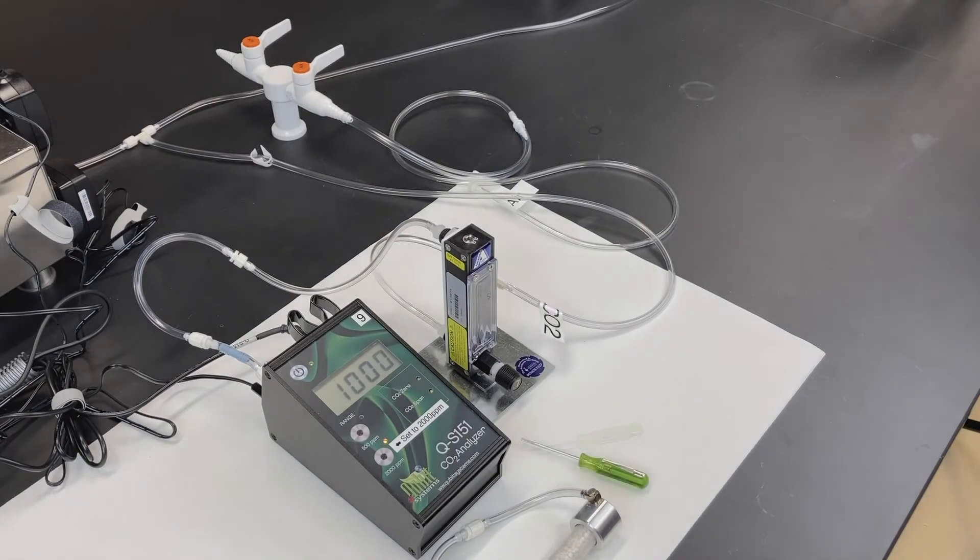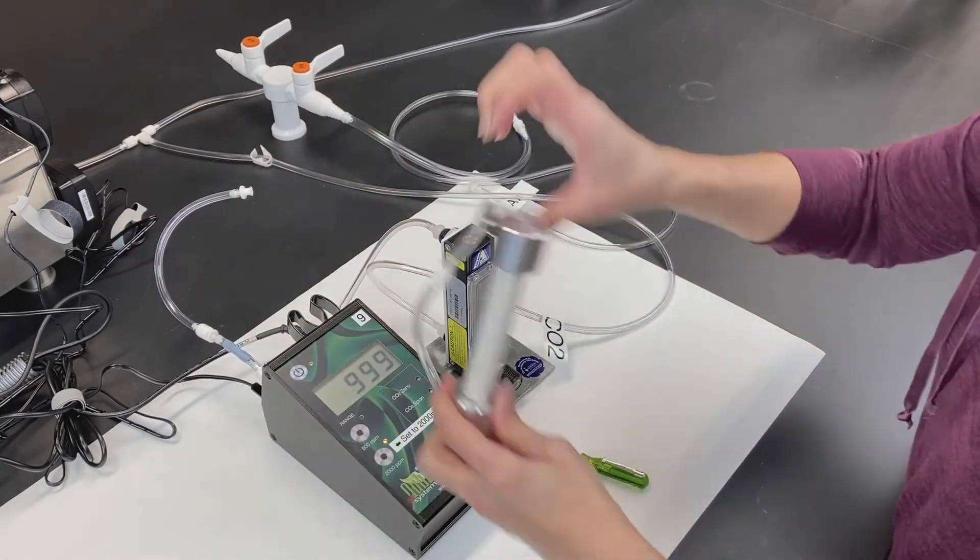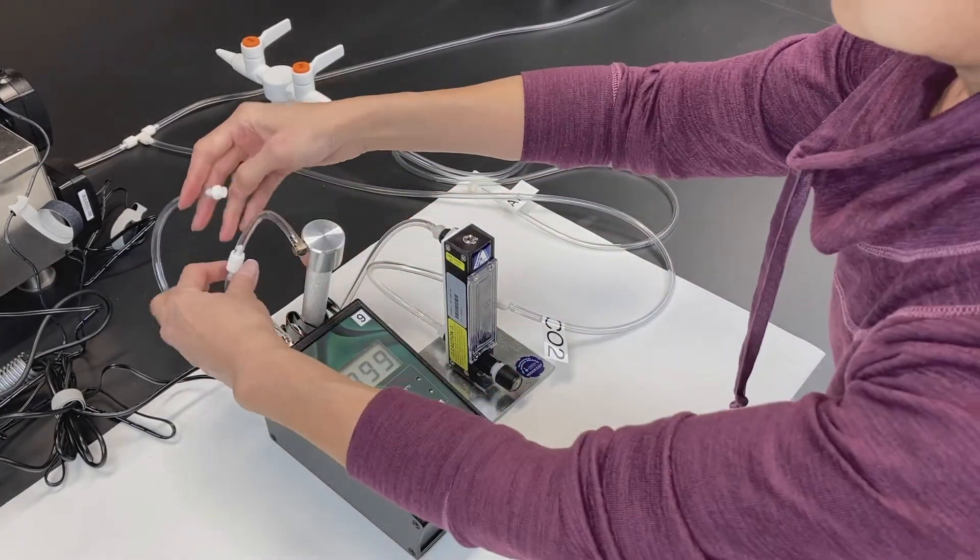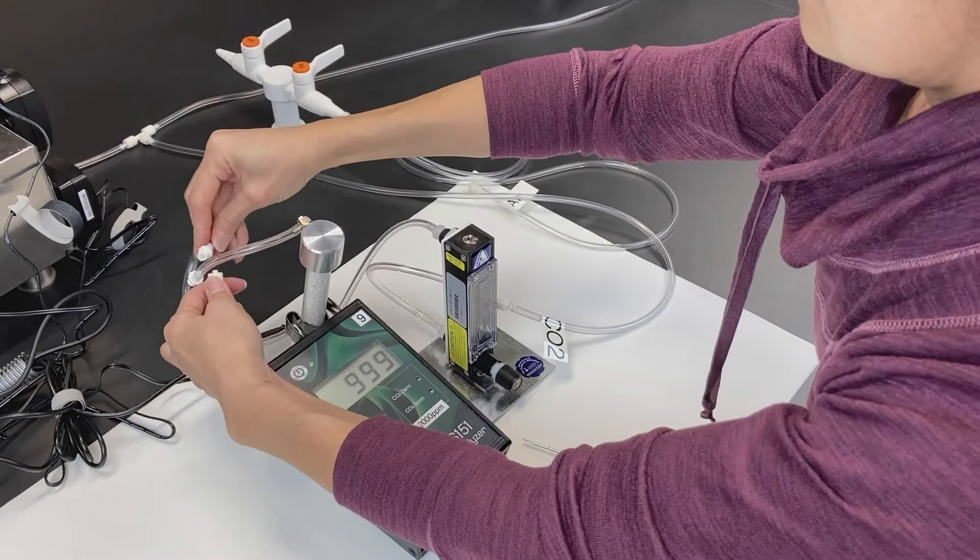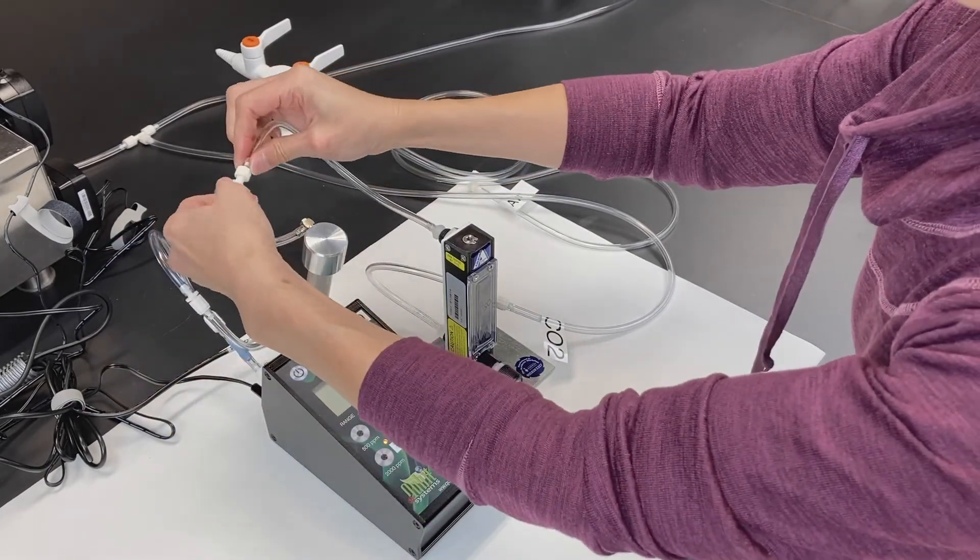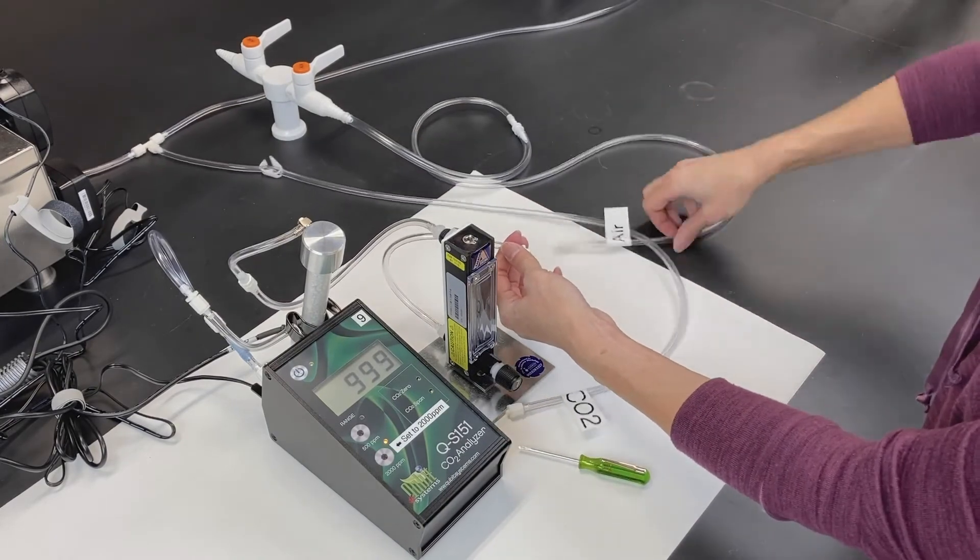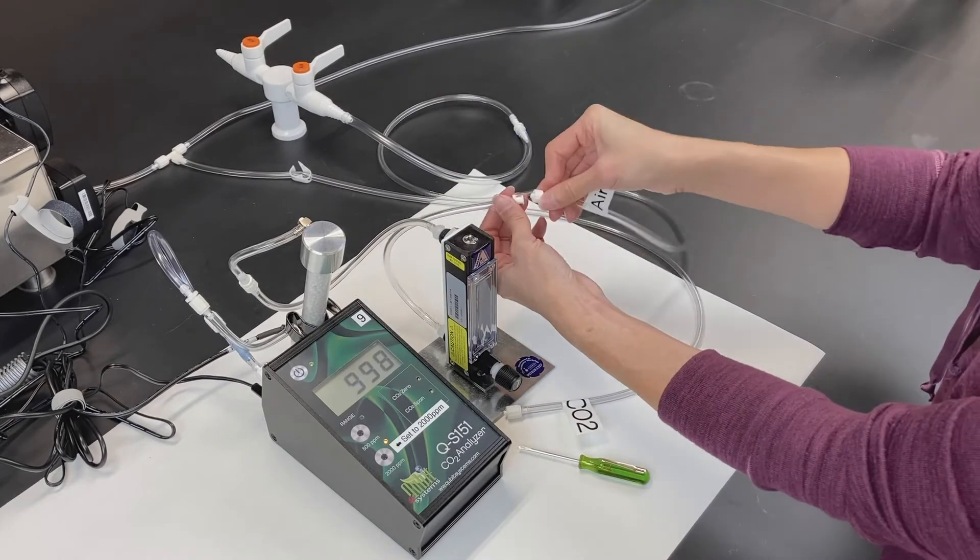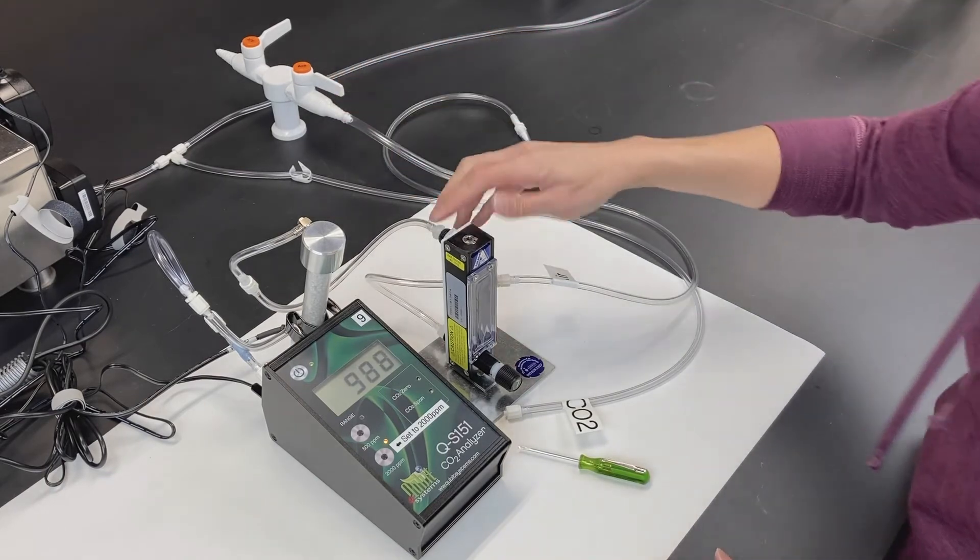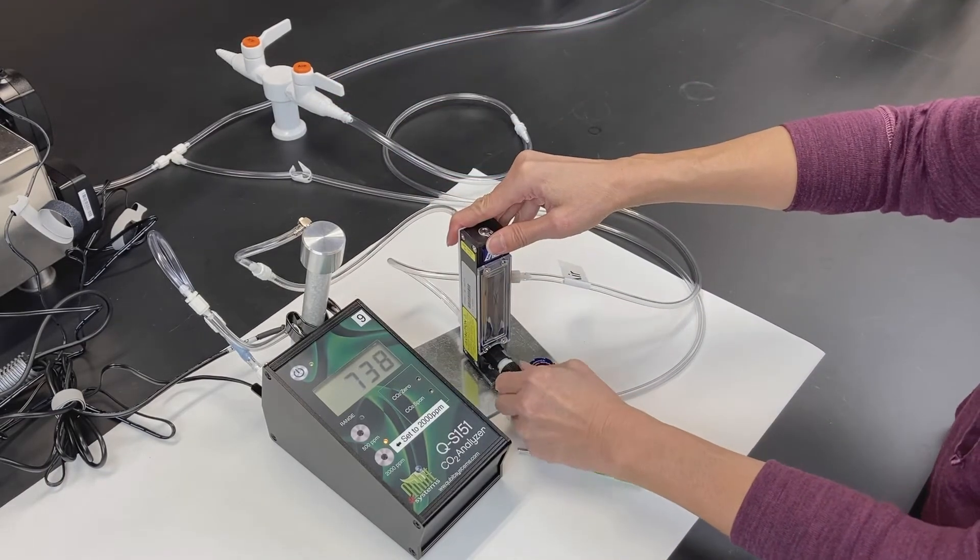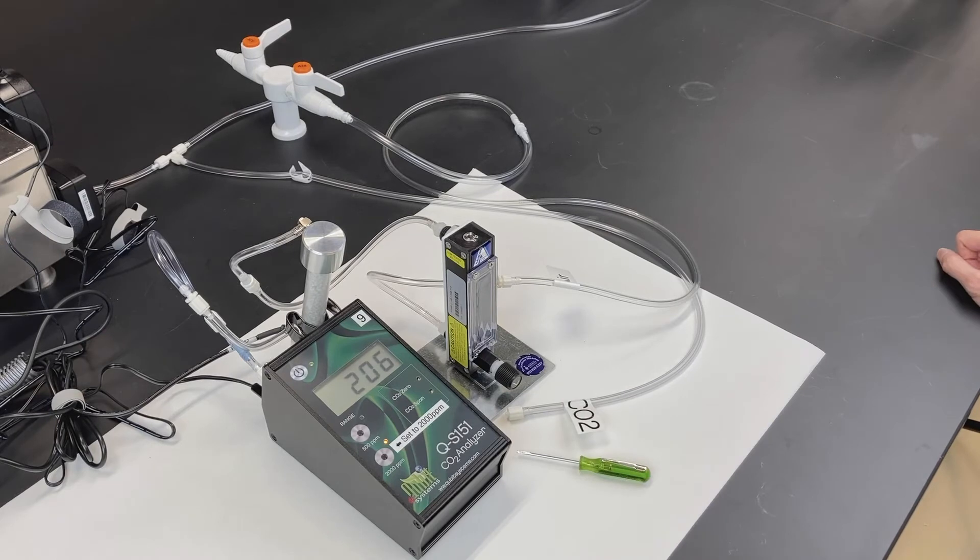Now turn off the carbon dioxide and reconnect the carbon dioxide scrubbing column and the air line. Turn on the air and adjust the flow meter if needed. The reading on the gas analyzer should decrease back to zero.